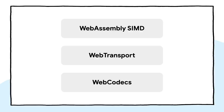The three specific APIs that we've been exploring and that I want to talk about today are WebAssembly SIMD, WebTransport, and WebCodecs. I'll mention from the start that all of these are fairly cutting-edge and most of them are in active development. So while they're all in a place where you can start to play with them, these aren't shipping APIs just yet.